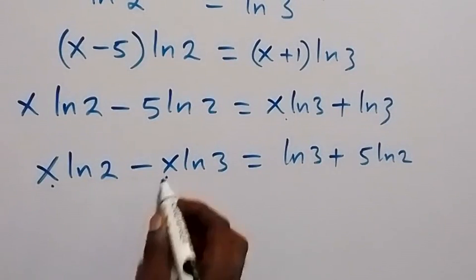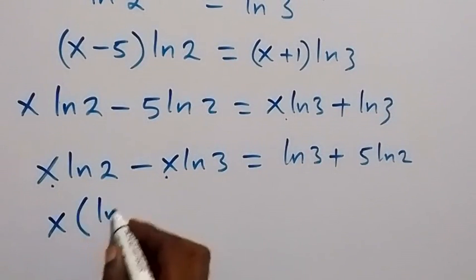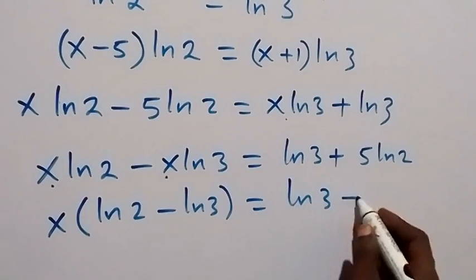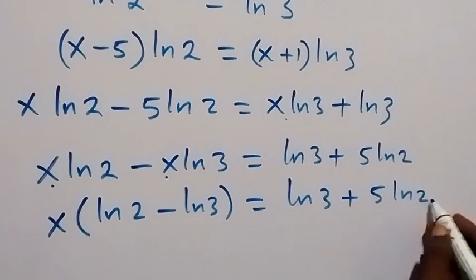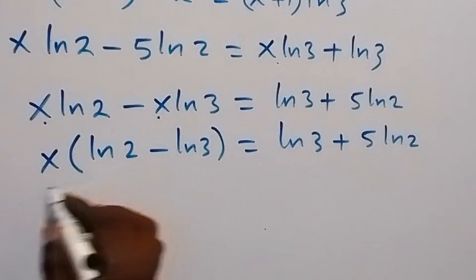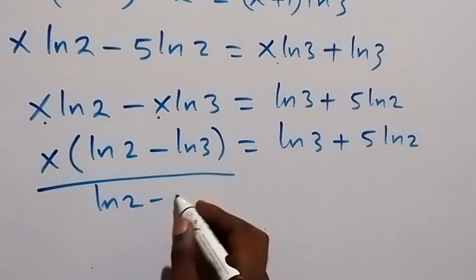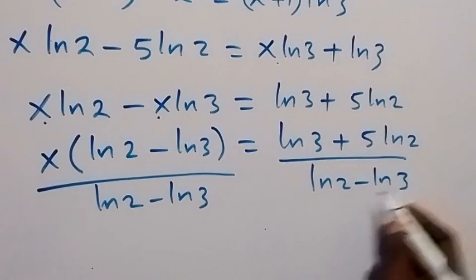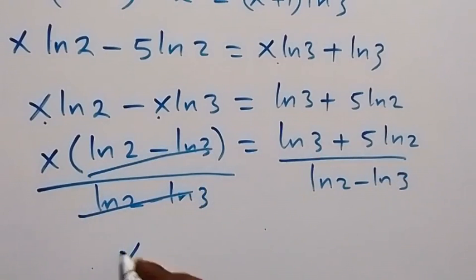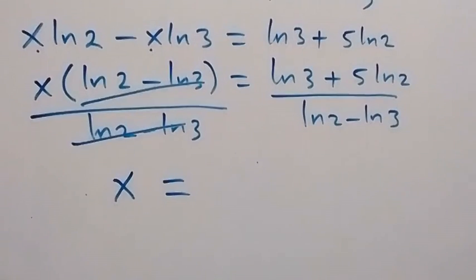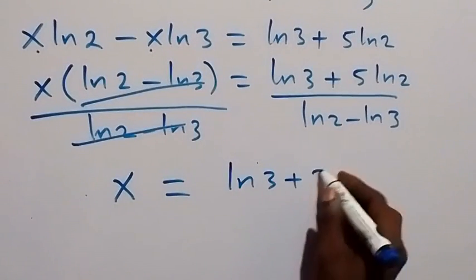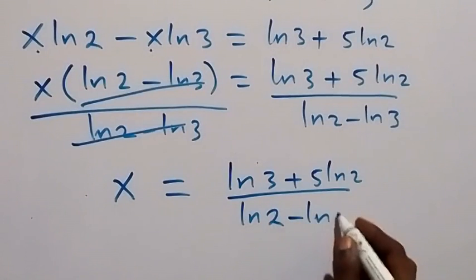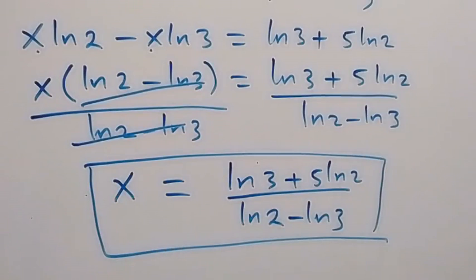Then from here, we factor x from the bracket: x times (ln 2 minus ln 3) equals to ln 3 plus 5 ln 2. Then we divide both sides by ln 2 minus ln 3, these cancel out, and we are left with x equals to ln 3 plus 5 ln 2 divided by ln 2 minus ln 3. So here we have the value of x from the first method.